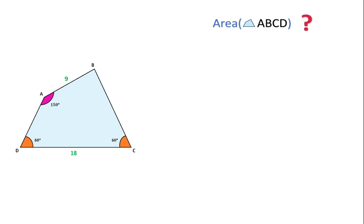As we know, the sum of angles of a quadrilateral is equal to 360°. If we add angle A, angle D, and angle C, their sum is 270°. So this means angle B will be equal to 90°.